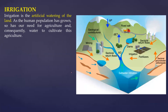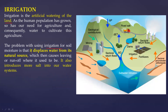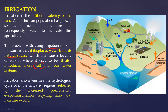Next is irrigation. Not all areas have streams and rivers, so we practice artificial watering of land. When we induce something into the natural system it always has an impact. Irrigation displaces water from its natural source and introduces more salt — we have seen soil alkalinization and salinization in areas of India affected by the Green Revolution. Irrigation also intensifies the hydrological cycle over irrigated regions, reflected by increasing precipitation, evapotranspiration, recycling ratio, and moisture export. These schematic diagrams can help you score well in examinations.